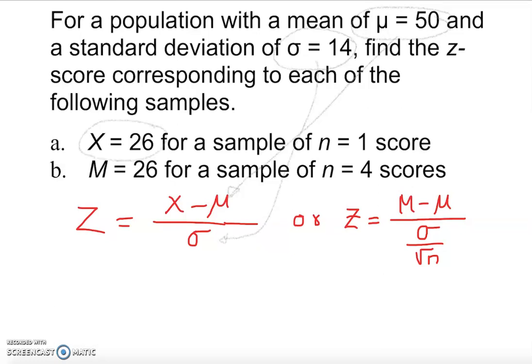So all I do, I just substitute it here. Z-score is equal to x, in this case is 26, minus population mean, which is 50, over standard deviation, which is 14. And if I do use my little calculator, it's going to give me negative 1.71.